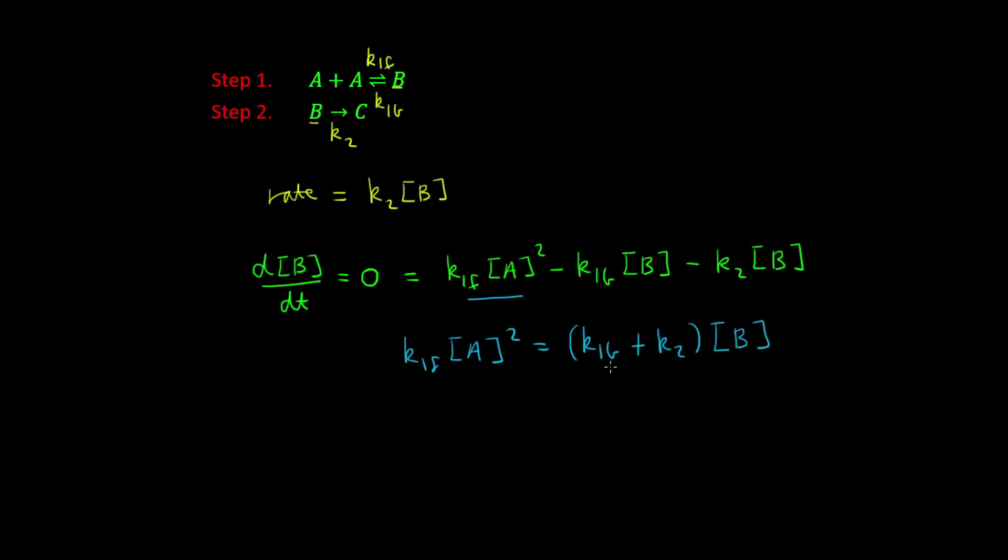And then if we divide through by this sum, what we get is the concentration of B is equal to K1F over K1B plus K2 by the concentration of A squared.